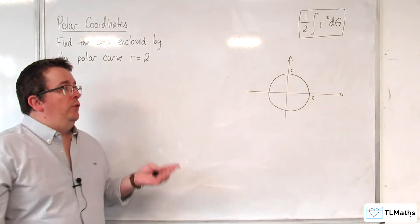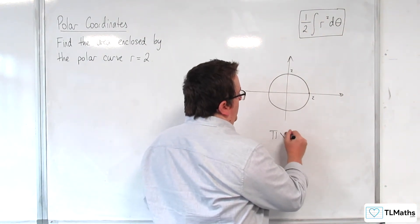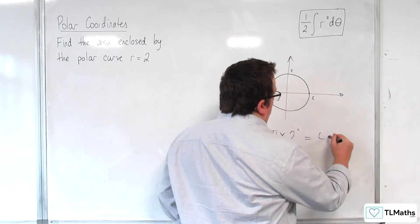So that means that we know the area should be pi r squared. So pi times 2 squared which is equal to 4 pi.